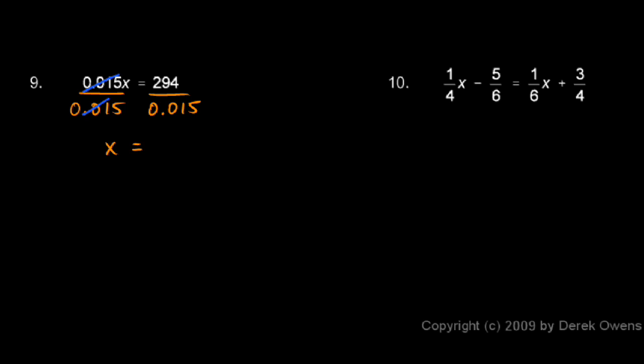It's best to do that on a calculator. You could work it out by hand, but it's perfectly appropriate to pull out a calculator here. 294 divided by 0.015 comes out to 19,600.